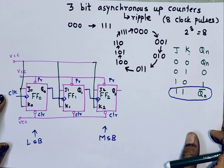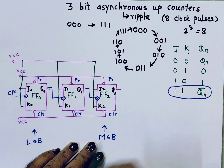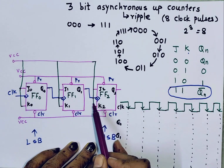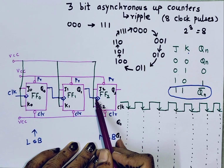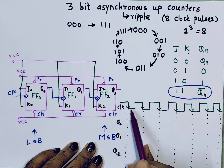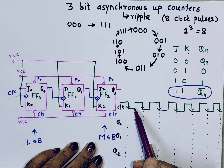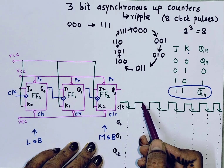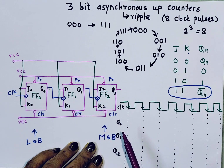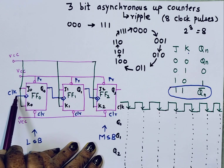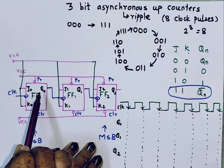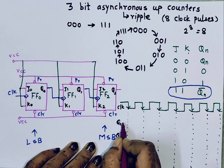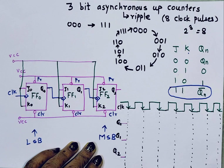Now let's see how it works. The clock is a square waveform, and here the clock is falling-edge triggered. Clocks can be either level triggered — at a positive or negative level — or edge triggered, at the rising edge (0 to 1) or the falling edge (1 to 0). Because of the bubble on the clock input, the output will change at falling edges. The external clock is given to the first flip-flop FF0. Initially, assume all outputs are 0.